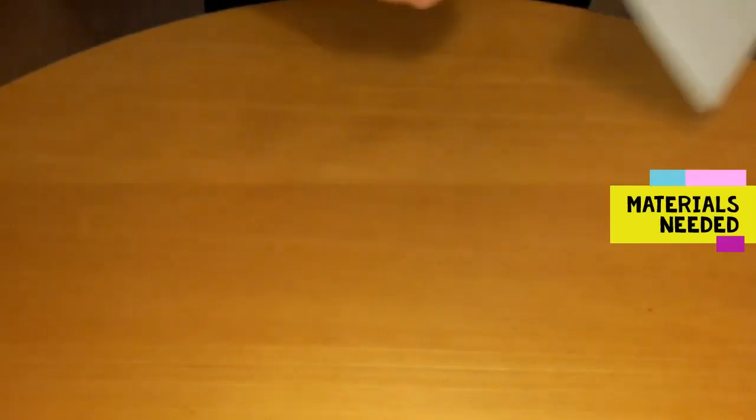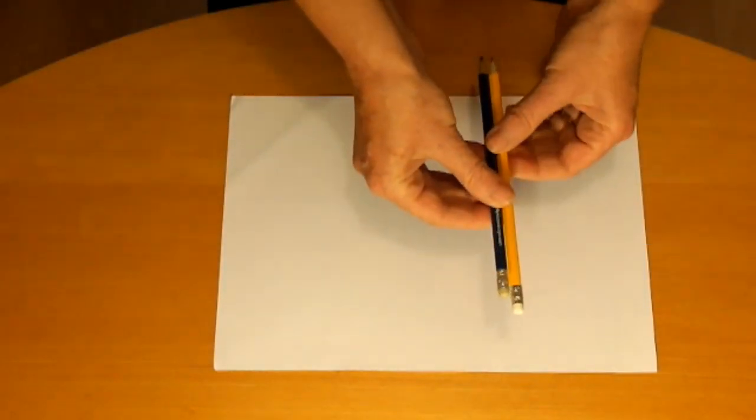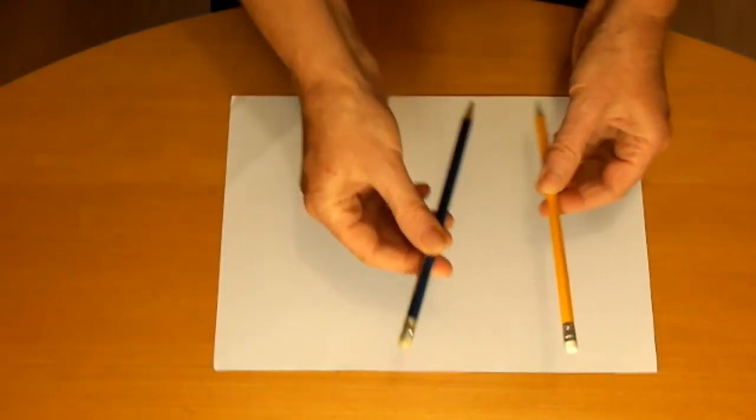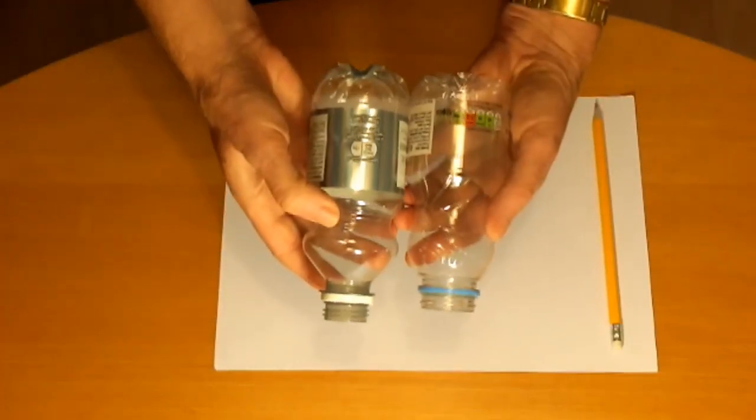You'll need paper, a pencil about 16-20cm long. Hexagonal ones are better than round ones. A plastic bottle or tube. I'll show you some examples. These are plastic drinks bottles.